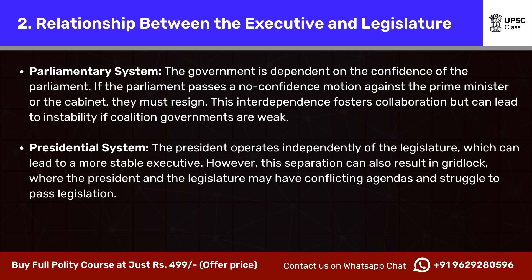Relationship Between the Executive and Legislature. Parliamentary System: the government is dependent on the confidence of the parliament. If the parliament passes a no-confidence motion against the prime minister or the cabinet, they must resign. This interdependence fosters collaboration but can lead to instability if coalition governments are weak. Presidential System: the president operates independently of the legislature, which can lead to a more stable executive. However, this separation can also result in gridlock, where the president and the legislature may have conflicting agendas and struggle to pass legislation.